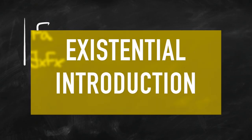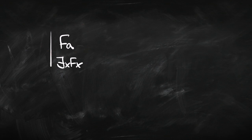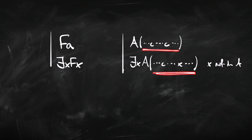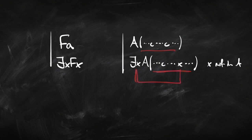Next rule: existential introduction. This one goes like this — from 'I'm happy,' we can infer that someone is happy. So from Fa, we can infer there is an x such that Fx. From any sentence A with some occurrences of a name c in it, we can infer that there is an x such that A. Notice here, we don't need to replace all instances of c with x — we can replace all of them, but we don't have to. We might just replace some of them.